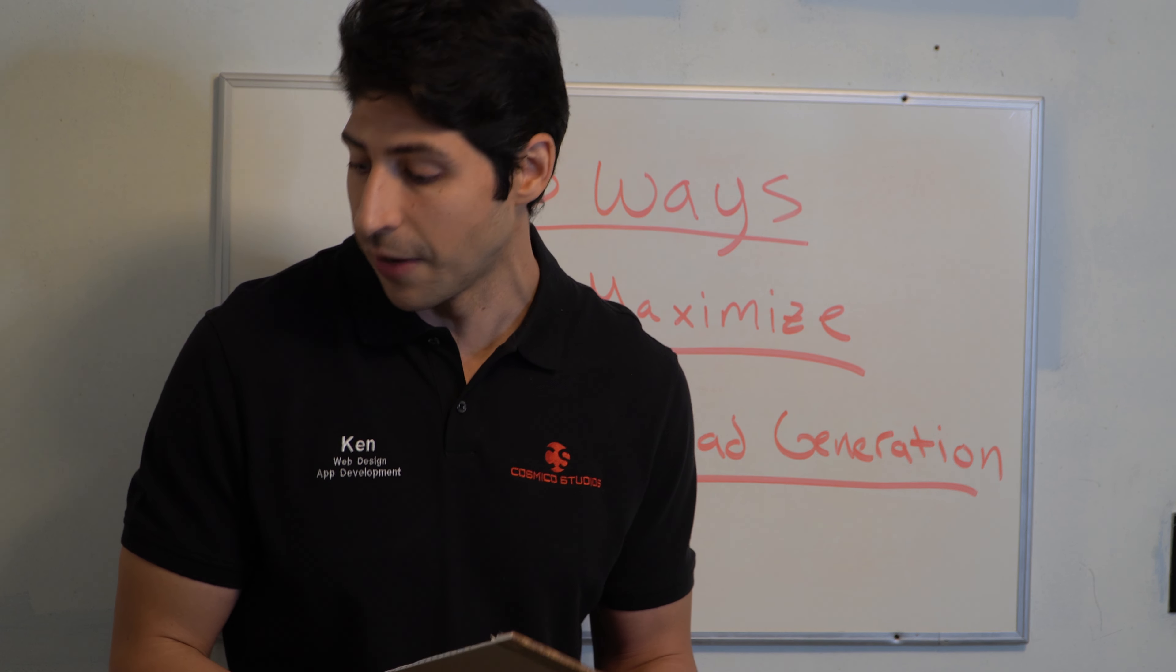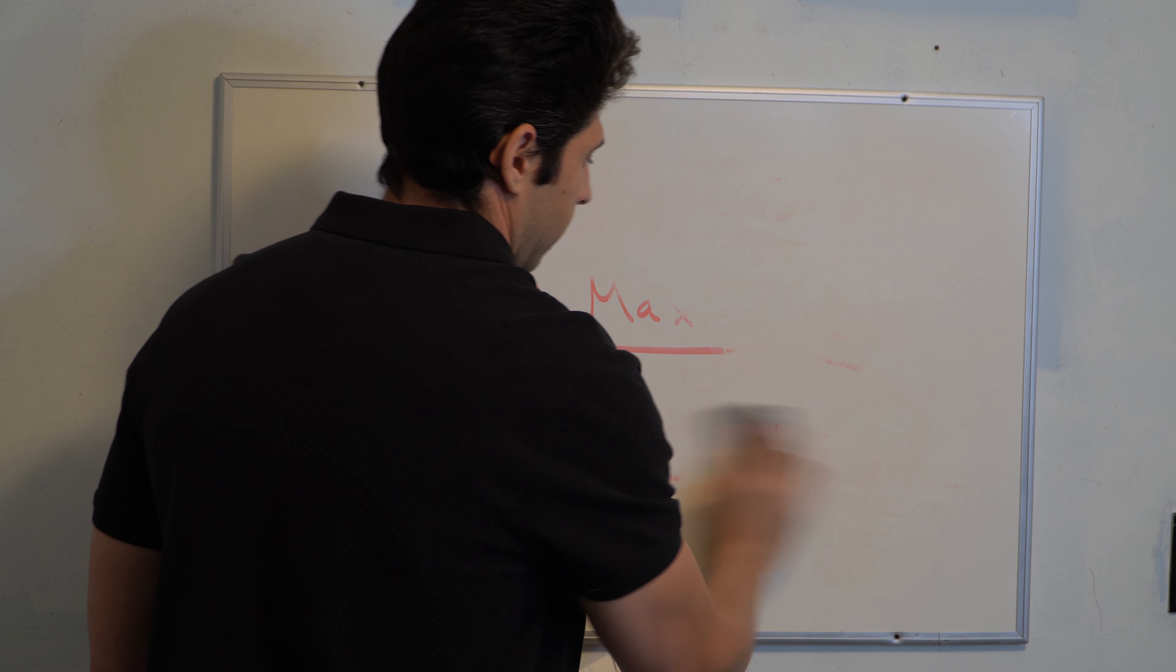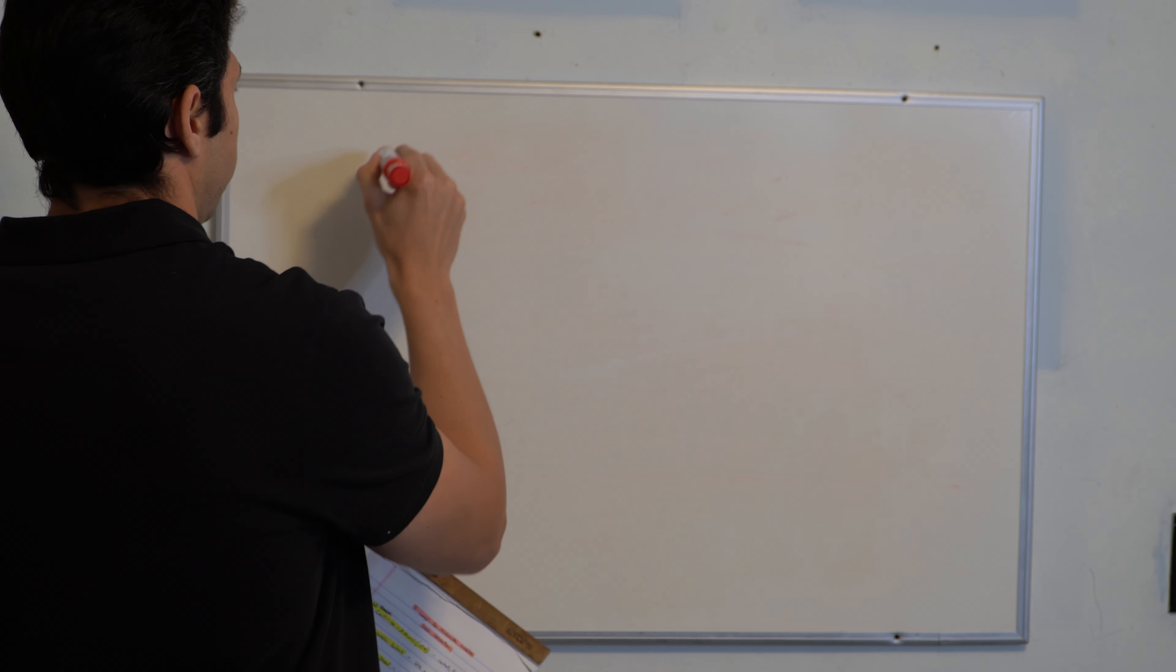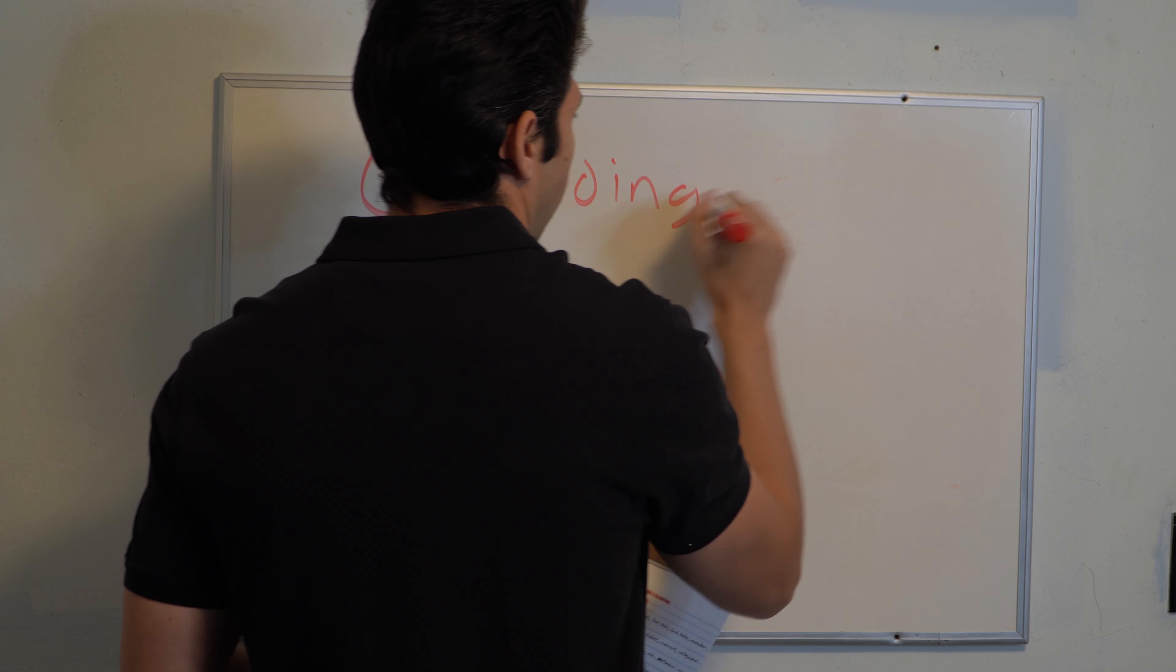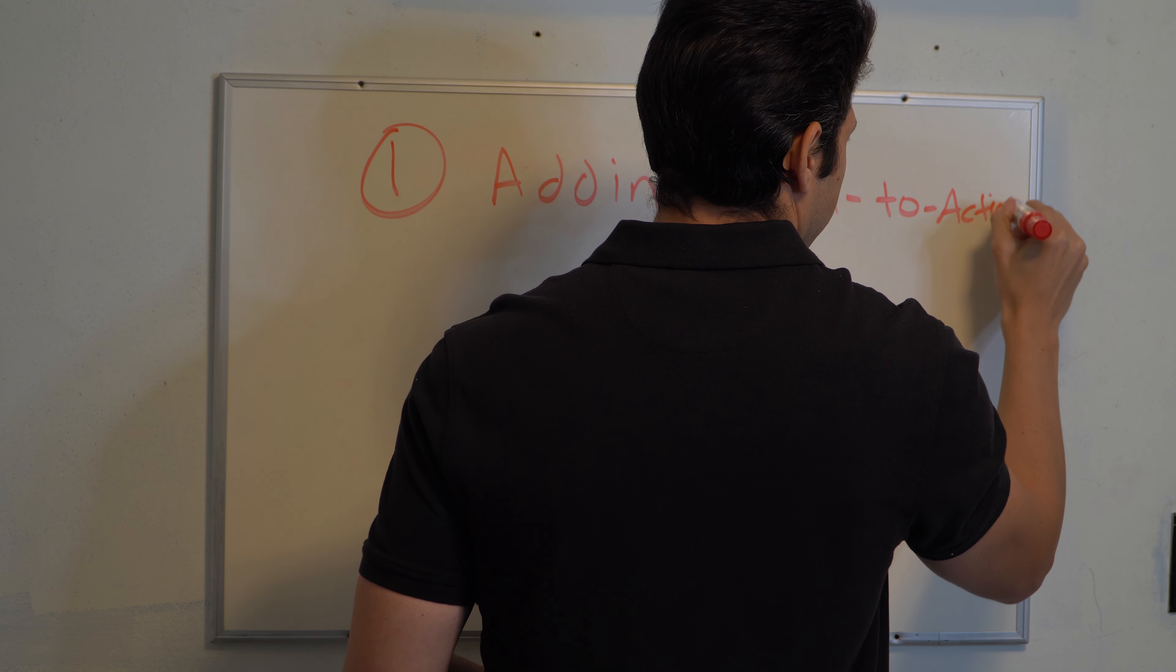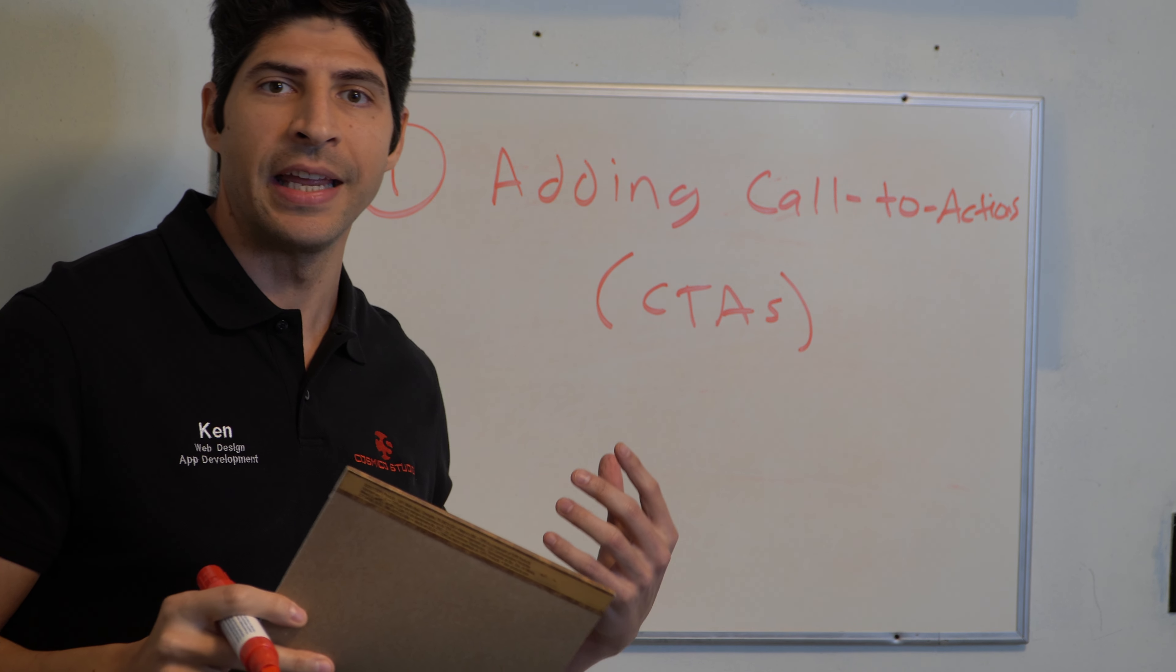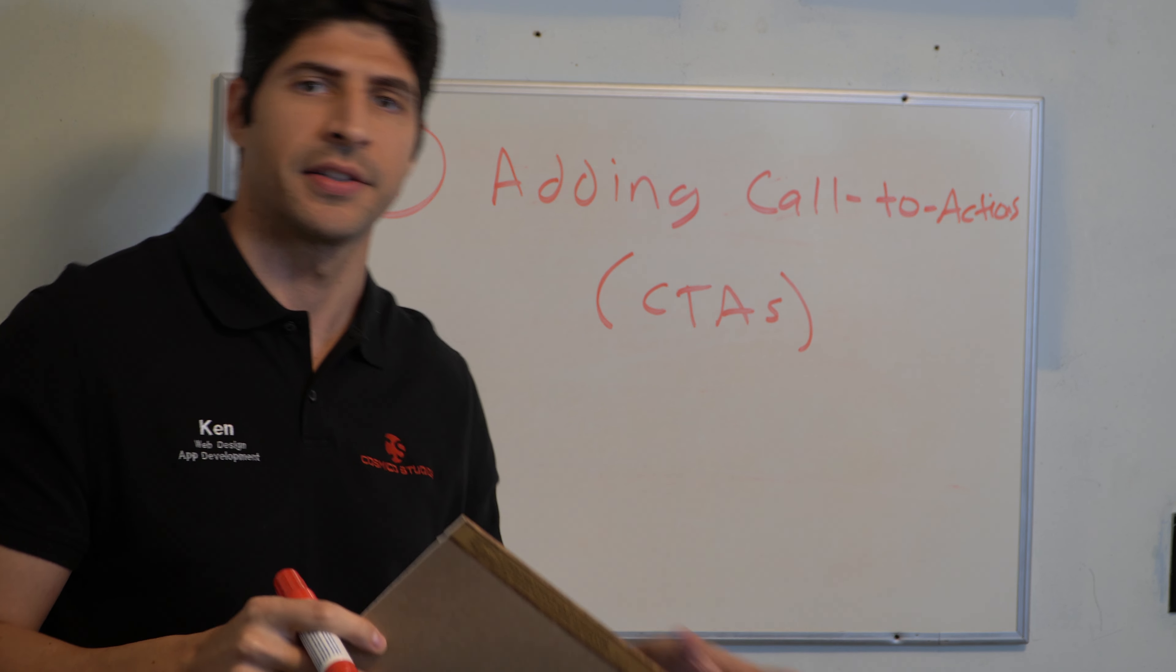So let's start off with the first one. The first one out of the five would be adding call to actions or CTAs. So a call to action is basically a way of telling the user or the customer, hey, you're on my site, you've read about us now act. Here's an action to do whether contact us or buy this product or do this free trial.